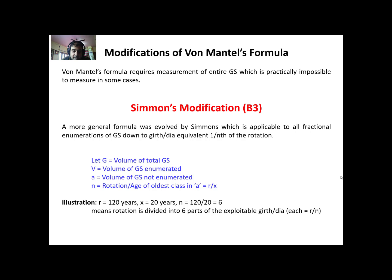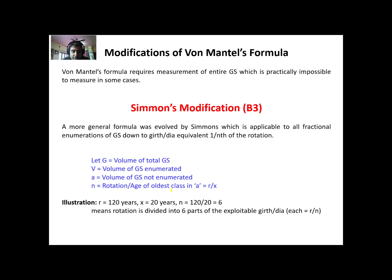To further understand this, let's assume we have a rotation of 120 years and X is the age of 20 years up to which we have decided to enumerate the growing stock — or parallelly, 20 centimeter diameter. So N in that case becomes 120 divided by 20, which equals 6. This means the rotation is divided into 6 parts of the exploitable diameter or girth.